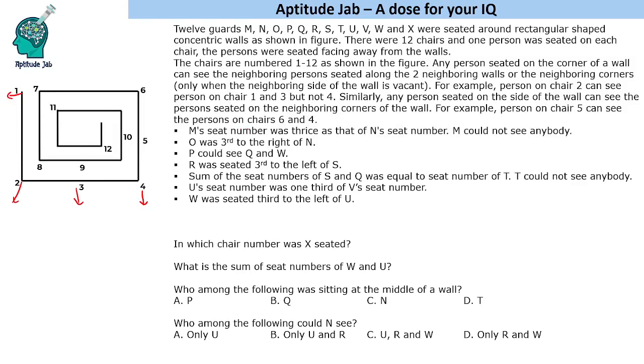Now certain information is given to us. We will have to figure out who is sitting where and accordingly answer the questions. Let us make a table like this: 1, 2, 3, 4, 5, 6.